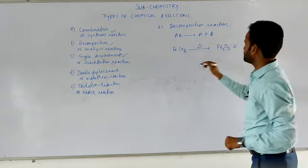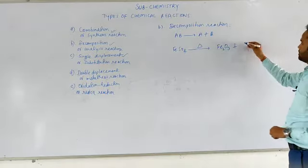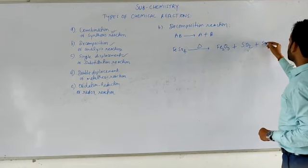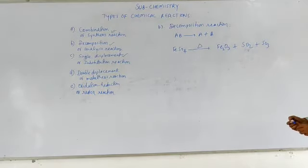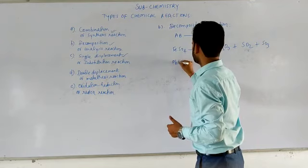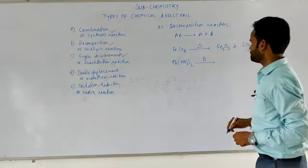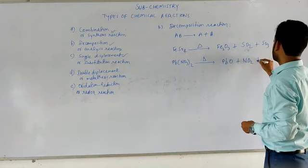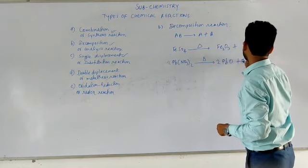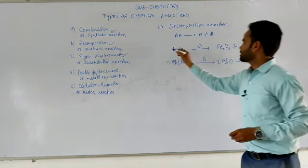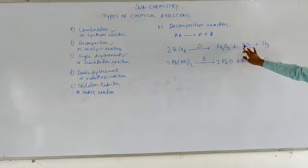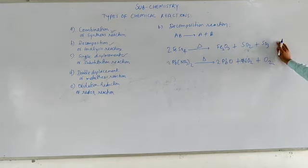FeSO4 (ferrous sulphate) decomposes into Fe2O3 (ferric oxide) plus SO2 plus SO3. Another example: Fe(NO3)2, after giving activation energy, decomposes into lead oxide plus NO2 plus oxygen — you can balance it by adding the appropriate coefficients. These equations are balanced and are examples of decomposition reaction.